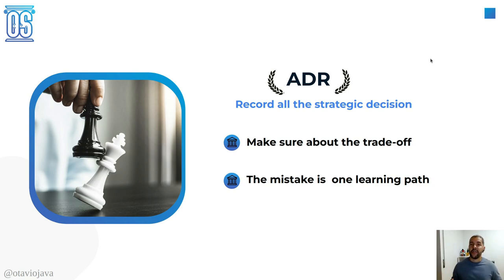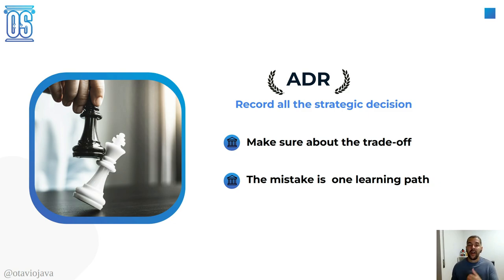The ADR — Architecture Decision Record — is where I record when I have two different products with the same goal. Any strategic decision lives there. Make sure that every decision includes its trade-offs, so I know the advantages and disadvantages. Of course, we're going to make mistakes — that happens — but the goal is to avoid the same mistake twice. It also brings more context into the technology stack: I went to that decision because of this, and I went to that other decision because of that.